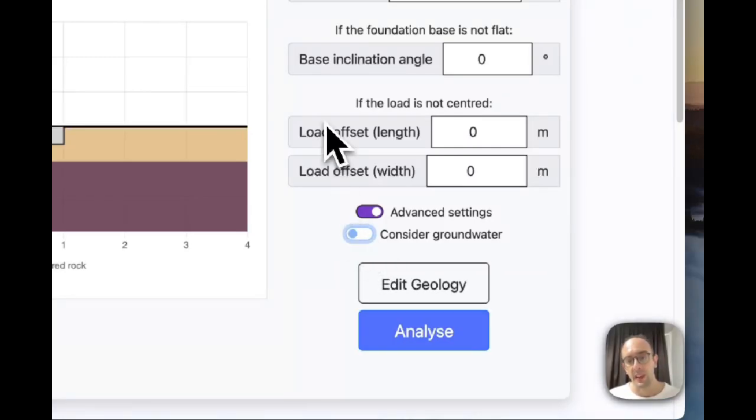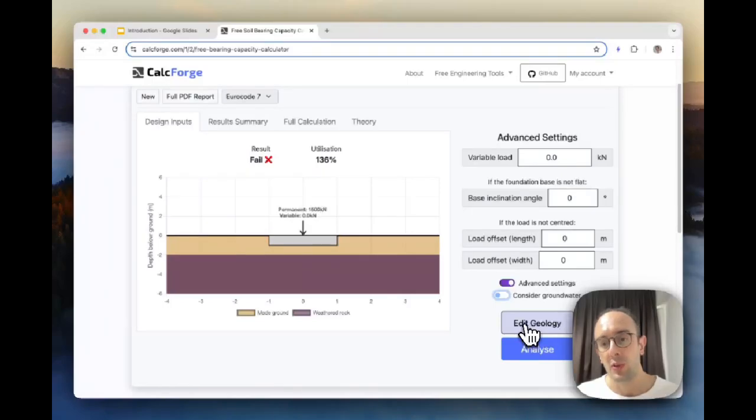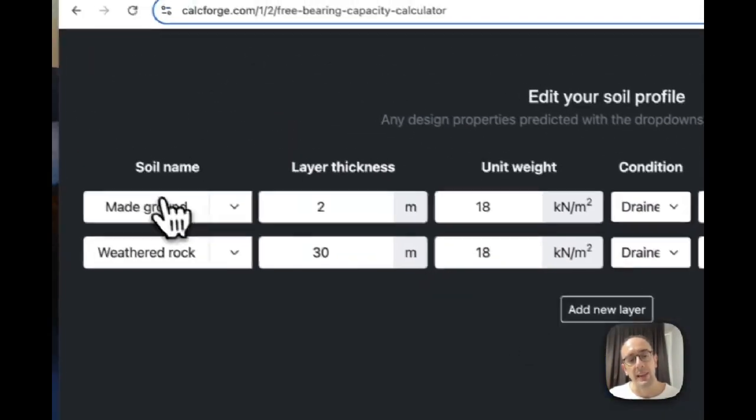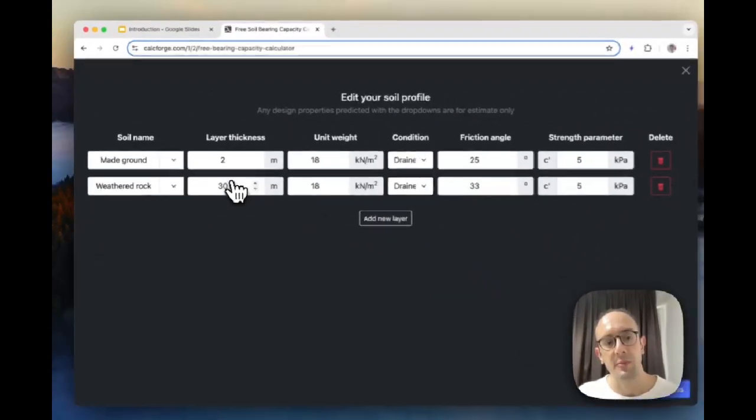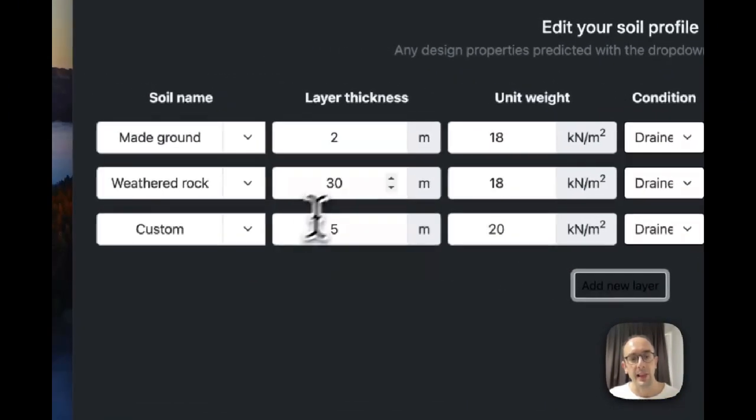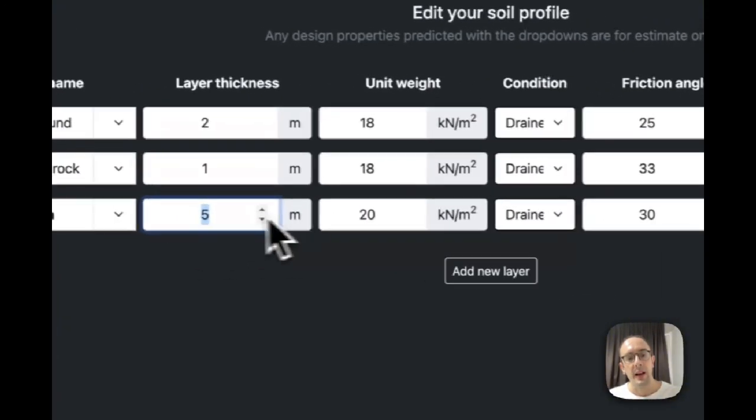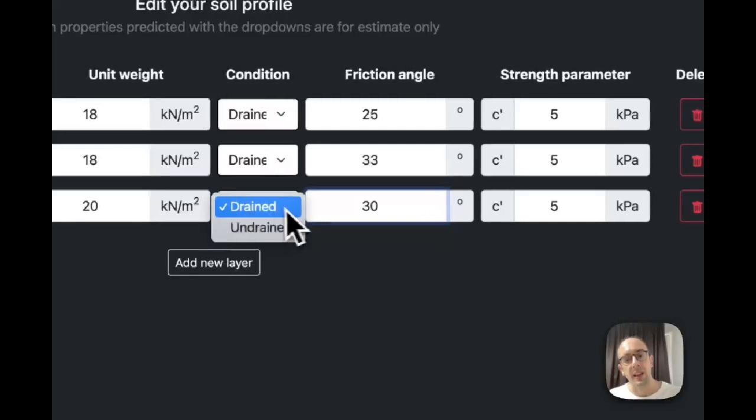I can also add groundwater so I can consider groundwater in this calculation. And what I'm going to do here is I'm going to show you the geology so I can actually edit the geology. So we've got two meters of made ground, we've got weathered rock, but let's say maybe I want to add another layer in here, let's say I've just got one meter of this and then I've got this custom group below that. I can actually then change these properties.